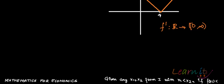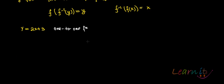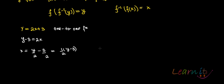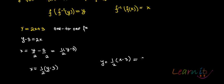This was shown to be a one-to-one function, though not onto. Let us find the inverse. We can write y − 3 = 2x, or x = (y − 3)/2 = ½(y − 3). Replacing x with y and y with x, we get f⁻¹(x) = ½(x − 3). This is the inverse function.